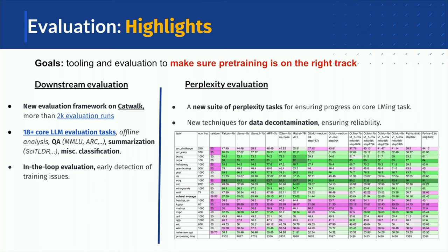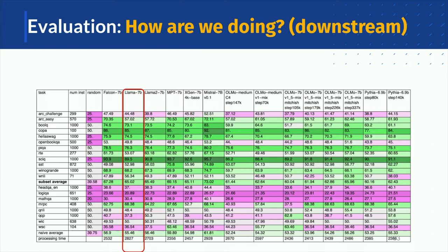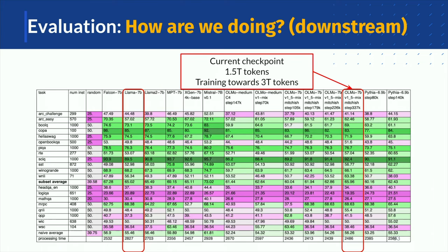We have a good platform and evaluation framework that incorporates downstream applications and also perplexity evaluation to show how good we are in terms of next token prediction. We evaluate in-loop while training at every step, and we also take checkpoints to externally compare with other models. Our current results are trained up to 1.5 trillion tokens, and we are training towards 3 trillion tokens. Right now our average performance is on par with LLaMA.